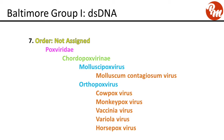The next group, order not assigned, family Poxviridae, subfamily Cordopoxvirinae. Genus molluscipoxvirus includes molluscum contagiosum virus. Genus orthopoxvirus includes cowpox virus, monkeypox virus, vaccinia virus, variola virus, and horsepox virus.